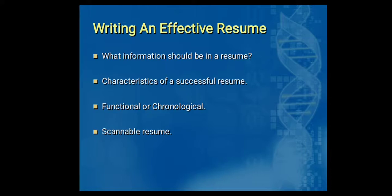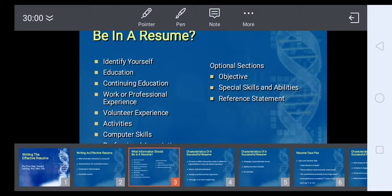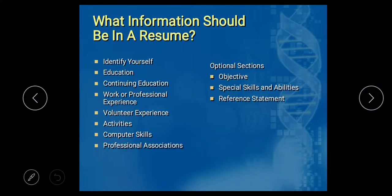The first question is: what information should be in a resume? We will also study characteristics of a successful resume, then types of resume — functional, chronological, and scannable. The information required in a resume includes: identify yourself, education, continuing education, work or professional experience, volunteer experience, activities, computer skills, professional associations, and optional sections such as objective, special skills and abilities, and reference statements.